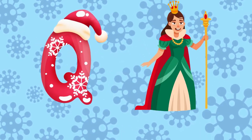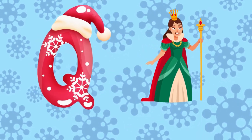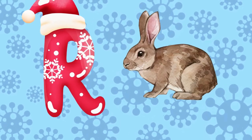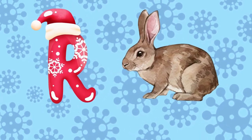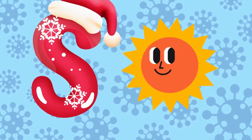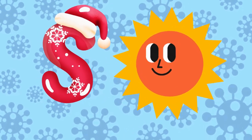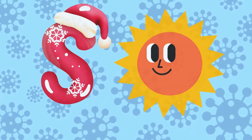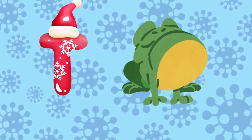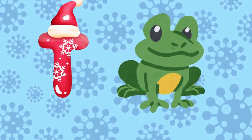Q is for queen, k-k-queen. R is for rabbit, r-r-rabbit. S is for sun, s-s-sun. T is for toad, t-t-toad.